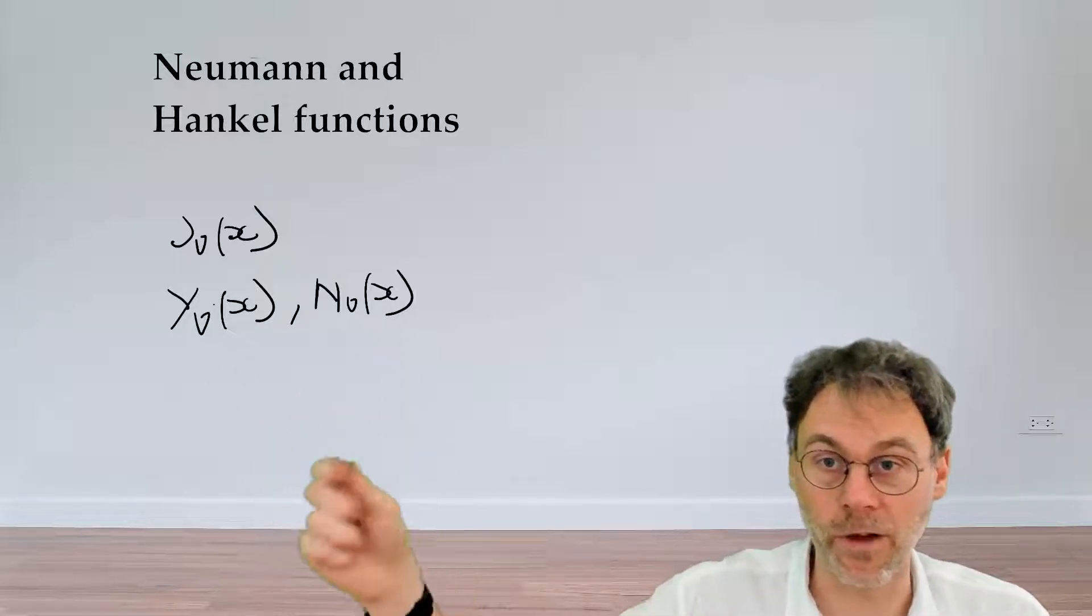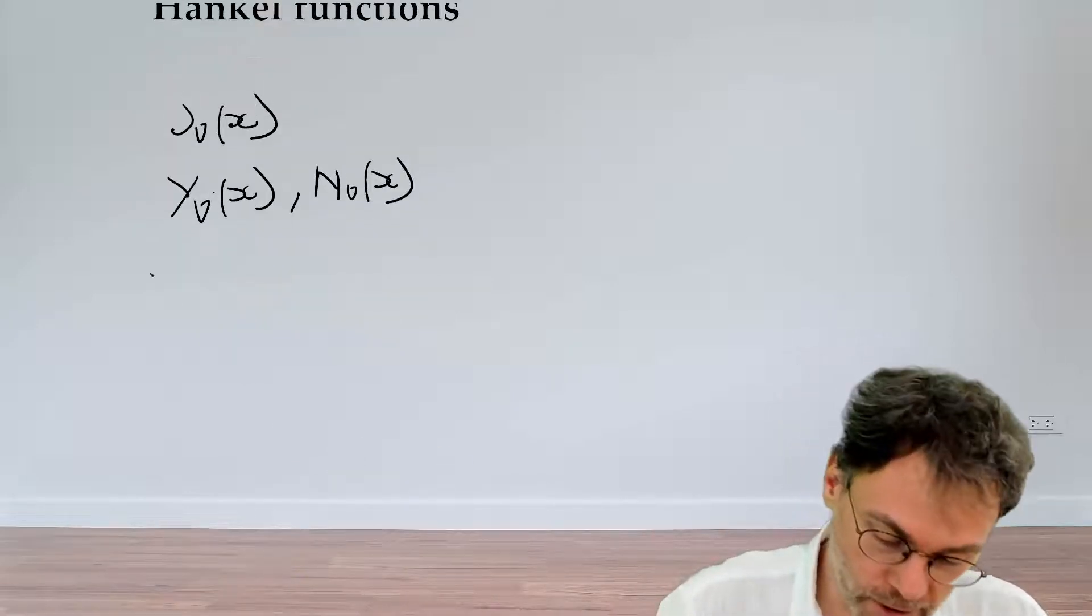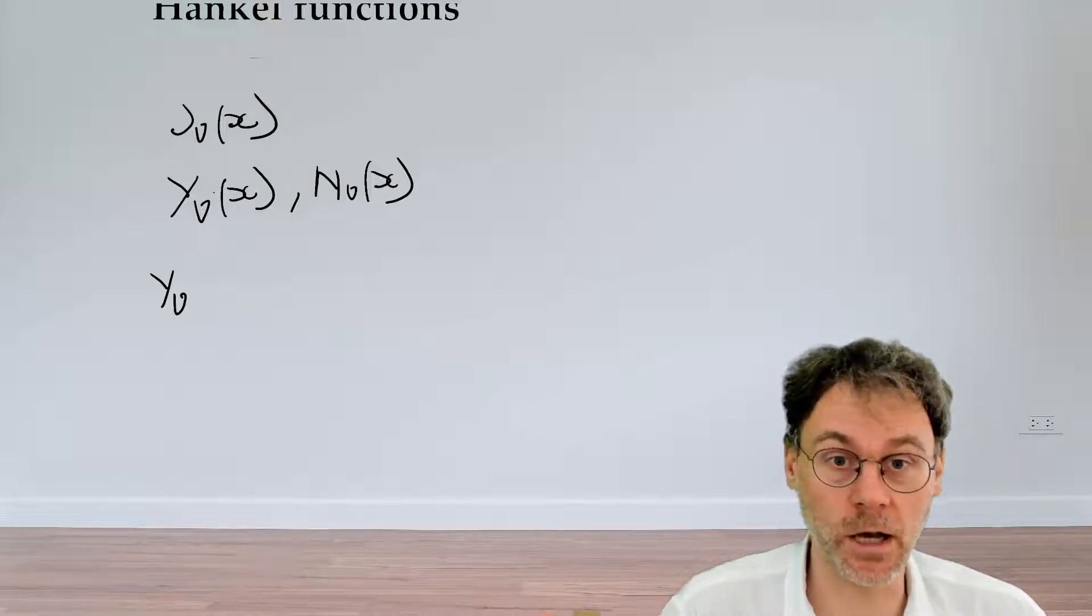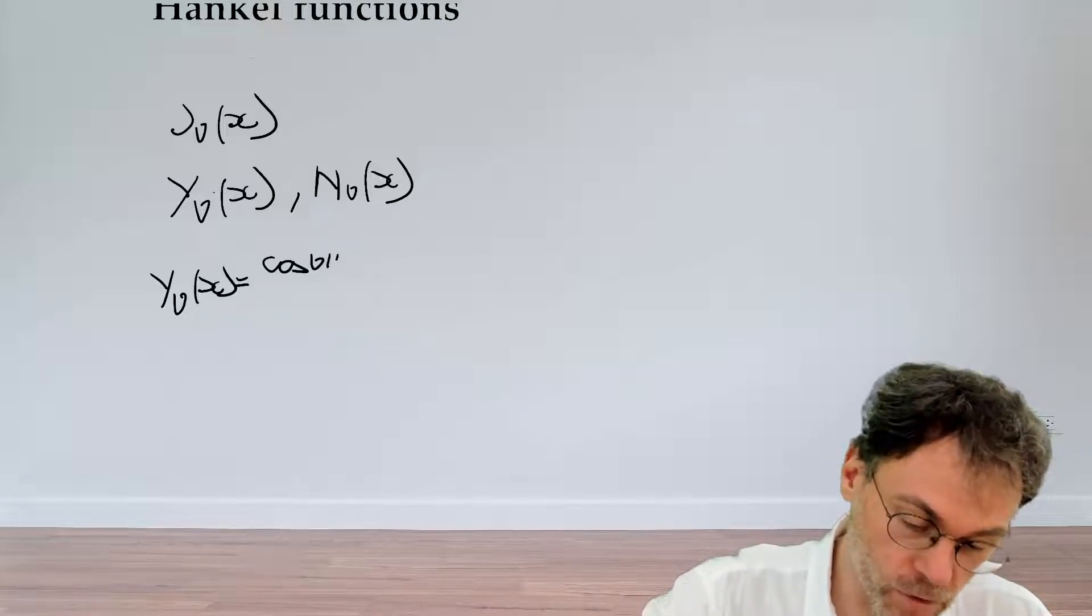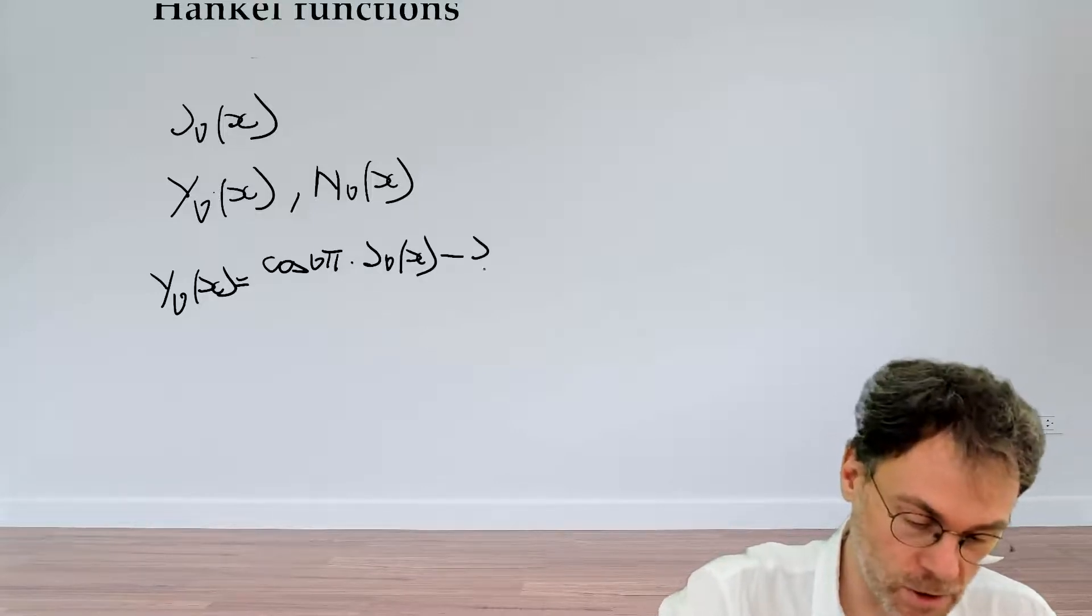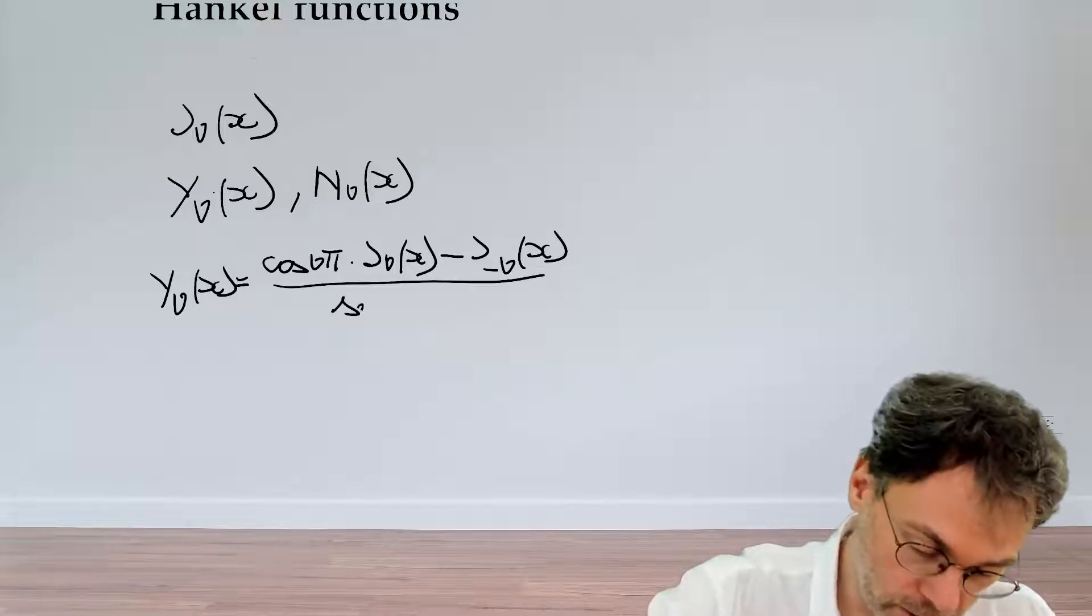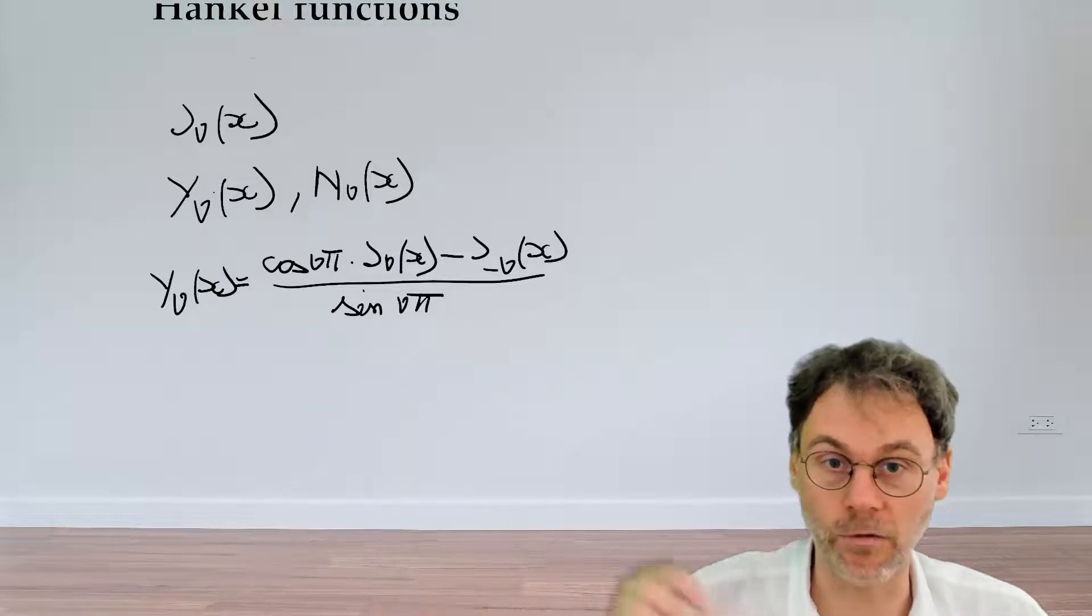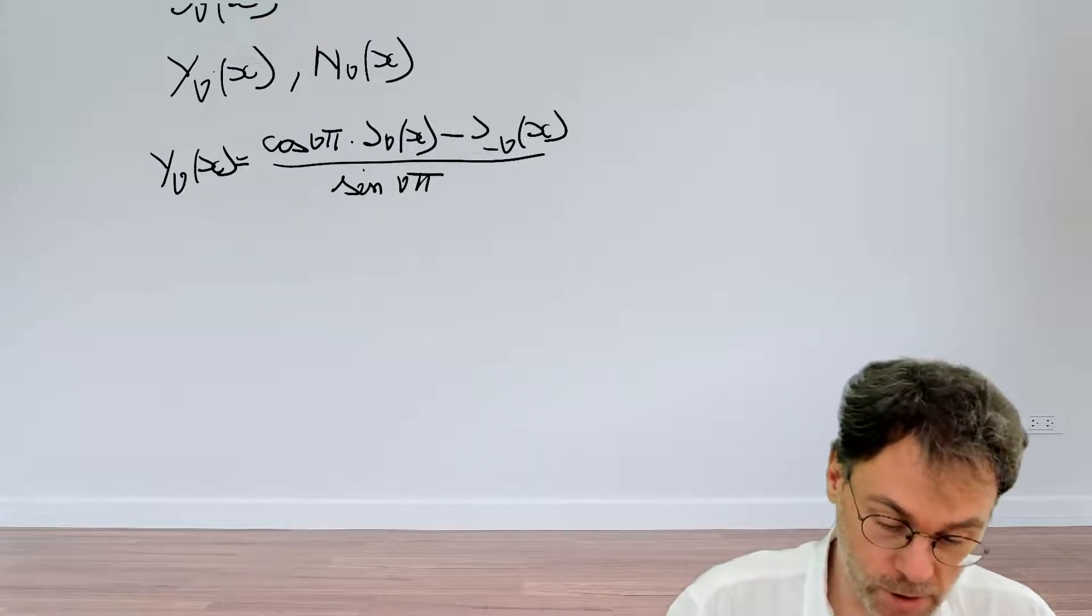So now we have a new member to the family of Bessel functions. It turns out, and I'm not going to prove that here, that there's an explicit formula for this Bessel function of the second kind, and that's the following: cosine of the order times π times J_ν of X minus J_{-ν} of X divided by sine νπ. So this is the explicit formula for the Bessel function of the second kind, and with this formula we can also plot these functions.